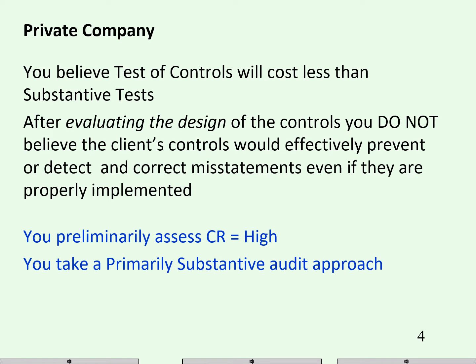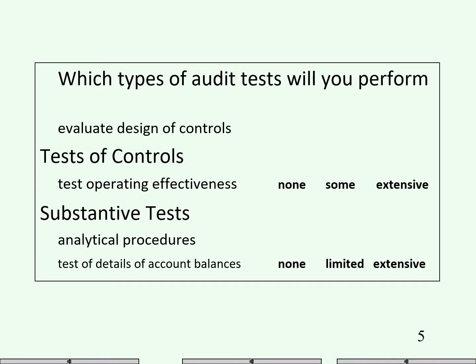For a private company, there's no use testing the controls if we don't believe they're effective. We always evaluate the design. For a private company, we're not required to perform tested controls. Always do analytical procedures because they're cheap. And we're going to do extensive substantive tests.